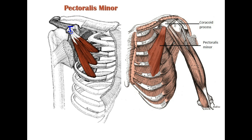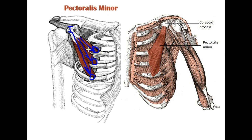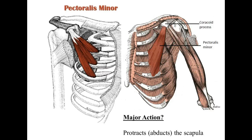The origin is on ribs 2 through 4. This is the coracoid process of the scapula, and it's going to move in this direction — pulling that scapula around towards the front. So it protracts or abducts the scapula, protracts or abducts by pulling on the coracoid process. Of course, it's going to work with the serratus anterior.